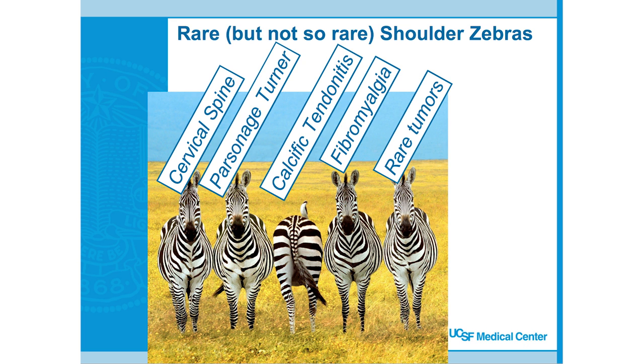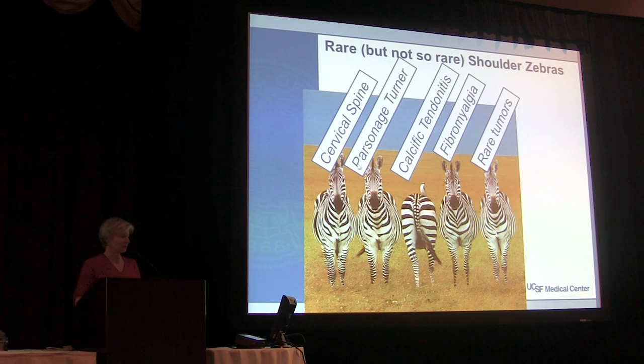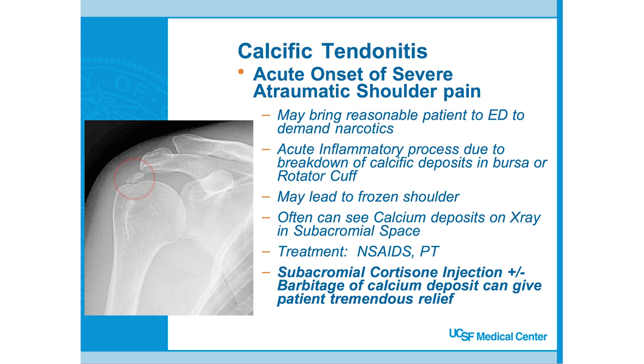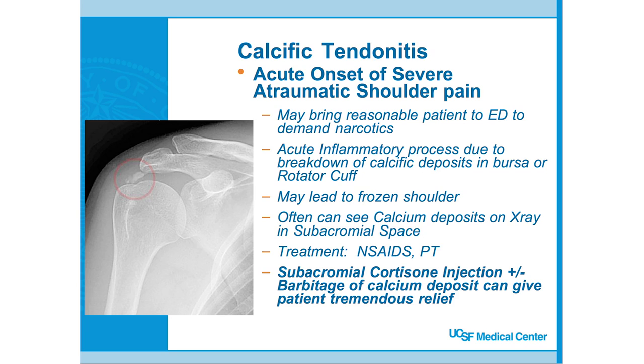Last but not least, think about the rare — but not so rare — shoulder zebras. Cervical spine issues can present as shoulder pain, sometimes more as pain next to the medial border of the scapula, often with radiating pain down to the hand — that's where Dr. O'Neill comes in. Other zebras include Parsonage-Turner syndrome, calcific tendonitis, fibromyalgia, and rare tumors. Calcific tendonitis: acute onset of severe atraumatic shoulder pain that may send a reasonable person to the emergency room.